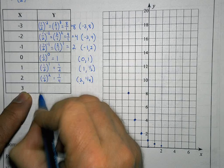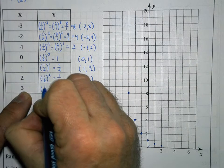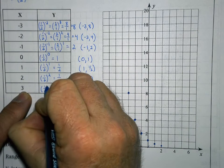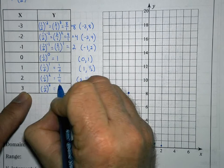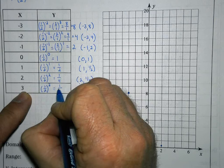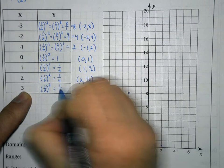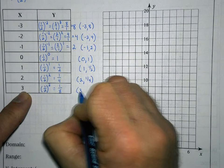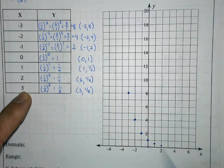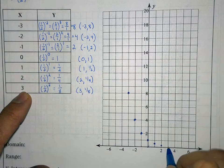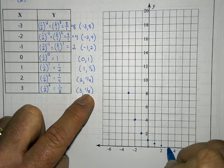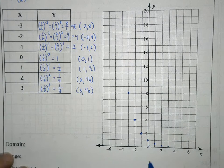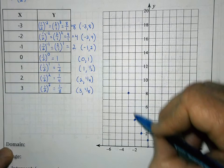The last value I'll substitute is 3, giving me one-half to the third power. 1 to the third power is 1 and 2 to the third power is 2 times 2 times 2, which is 8. So when x is 3, y is one-eighth. I go over to 3 on the x-axis; going up one-eighth is half of a fourth, so it's just barely above zero on the graph.